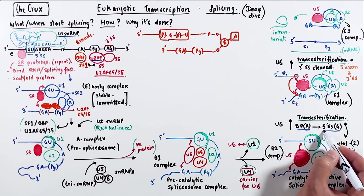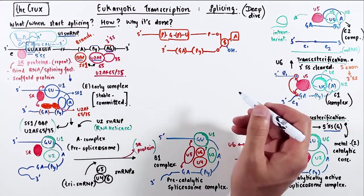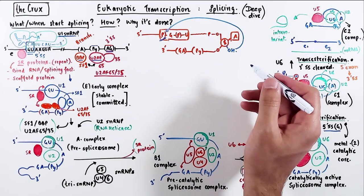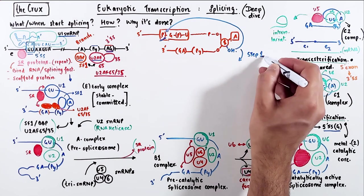Now, the 2' hydroxyl of the sugar with the adenine attacks the phosphate of the guanosine at the 5' splice site, and that's the first transesterification step.